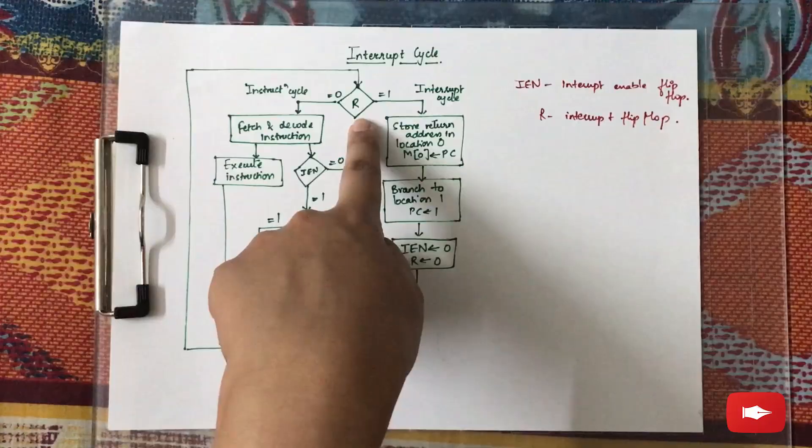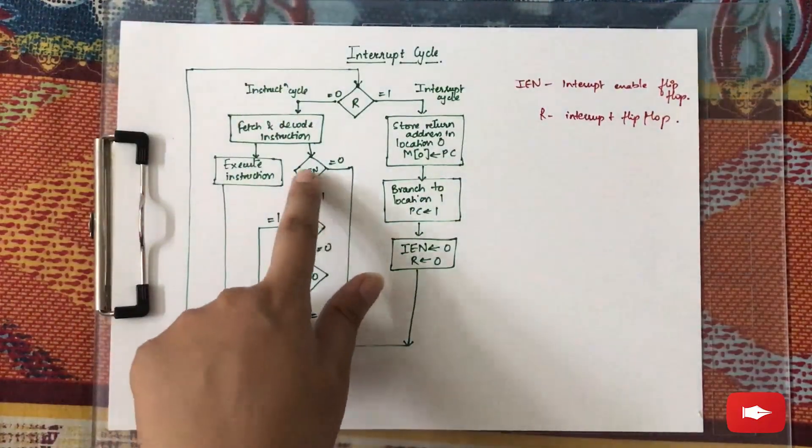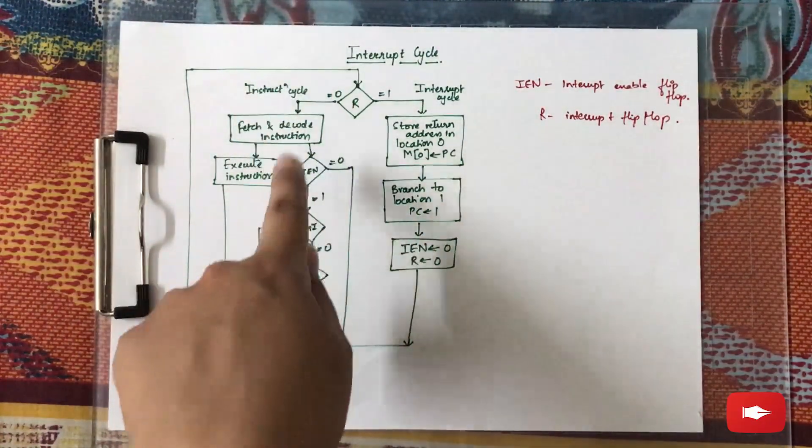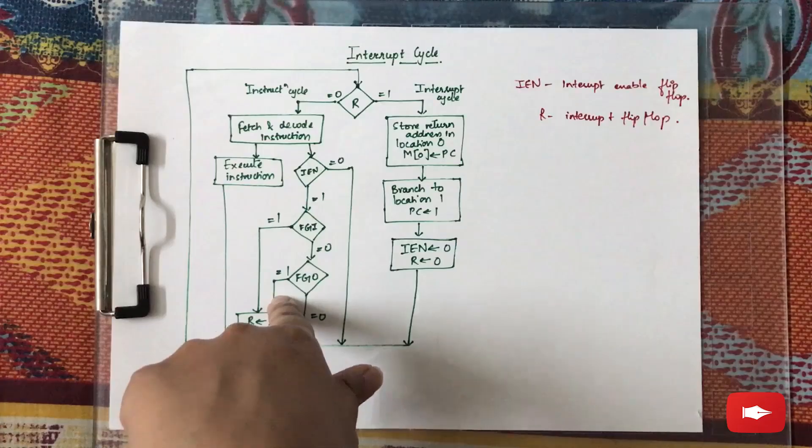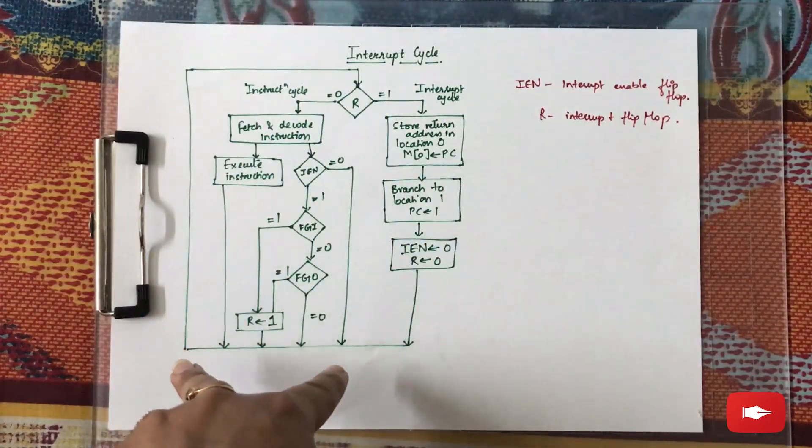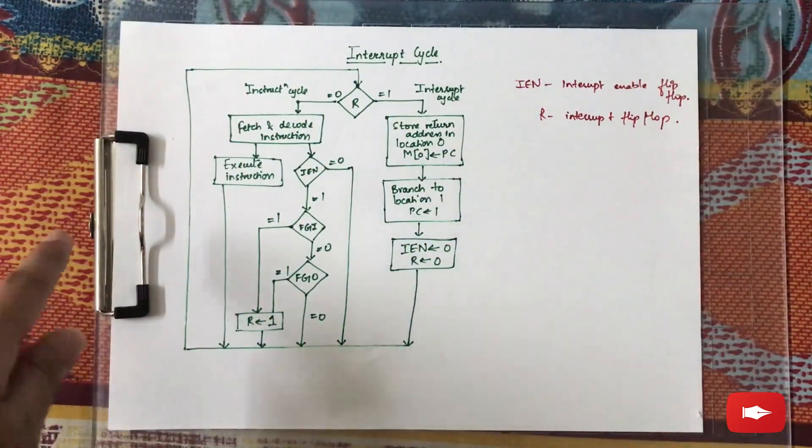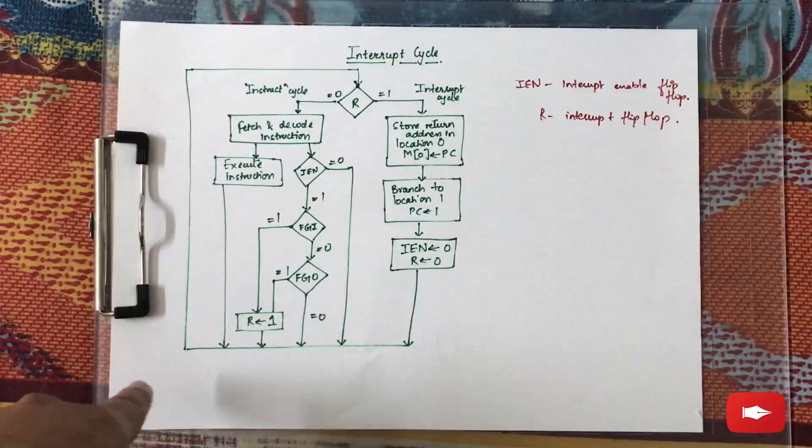Because when R is equal to zero and IEN is equal to zero, the instruction cycle is executed. So this is how the interrupt cycle is executed and interrupts are handled during the instruction cycle.